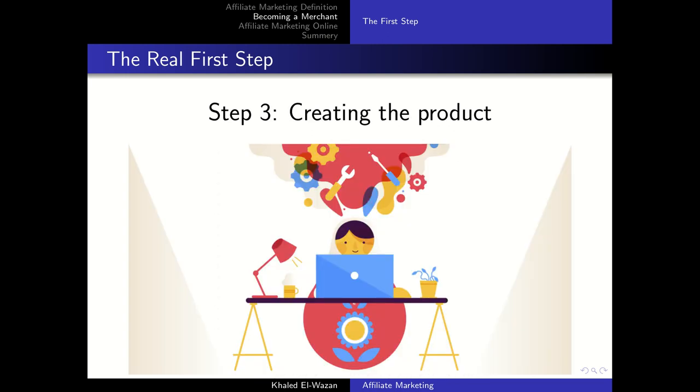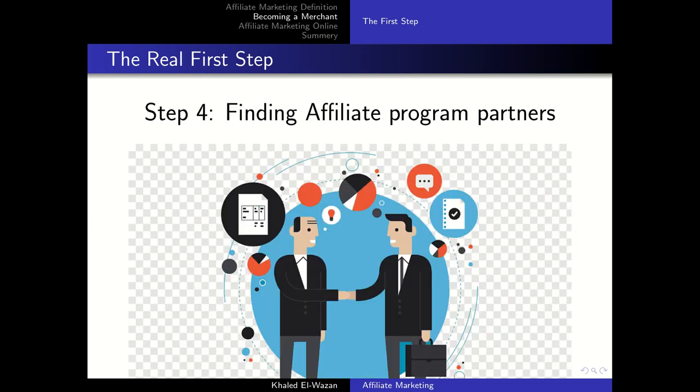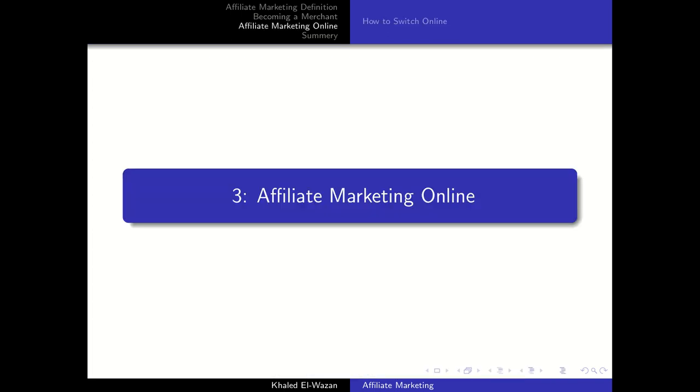The third step to becoming a merchant is to actually create the product, followed by the last step: finding affiliate program partners. With tools like Gumroad or Digital Product Delivery, you can easily set up affiliate program partners and allow them to collect commissions. Perhaps the toughest part is finding partners who actually have an audience that is interested in what you have to sell.